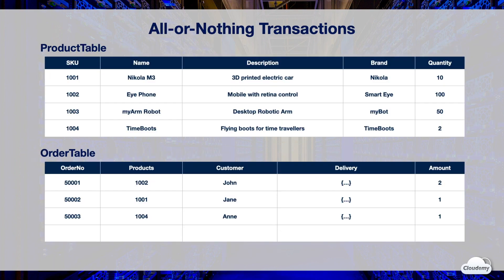Here is an example of all-or-nothing transactions. Suppose you have a product table and an order table for your furniture electronic store. The product table maintains products and inventory information; the order table tracks all customer orders. When your customer Jeff places a new order of 10 desktop robotic arms, the application will run a series of operations as a single all-or-nothing transaction to process the order.